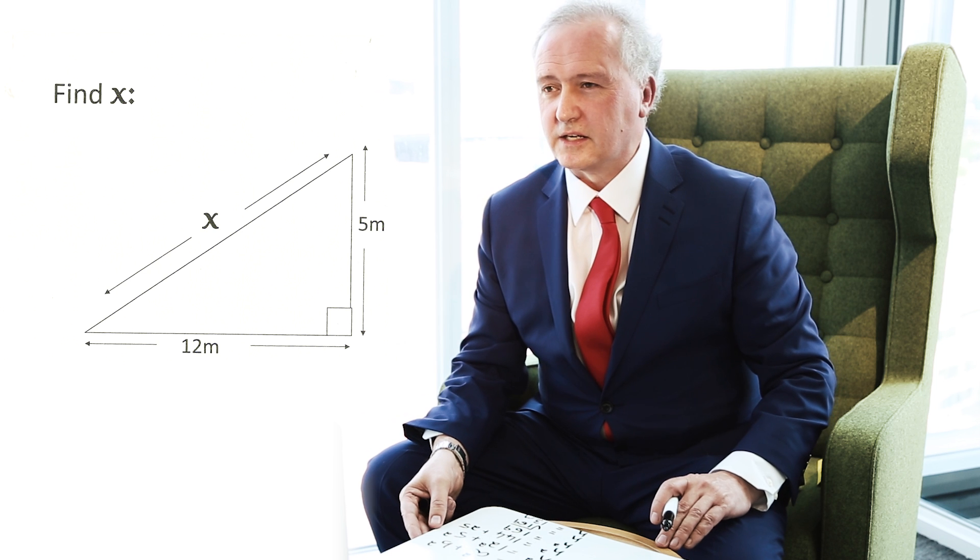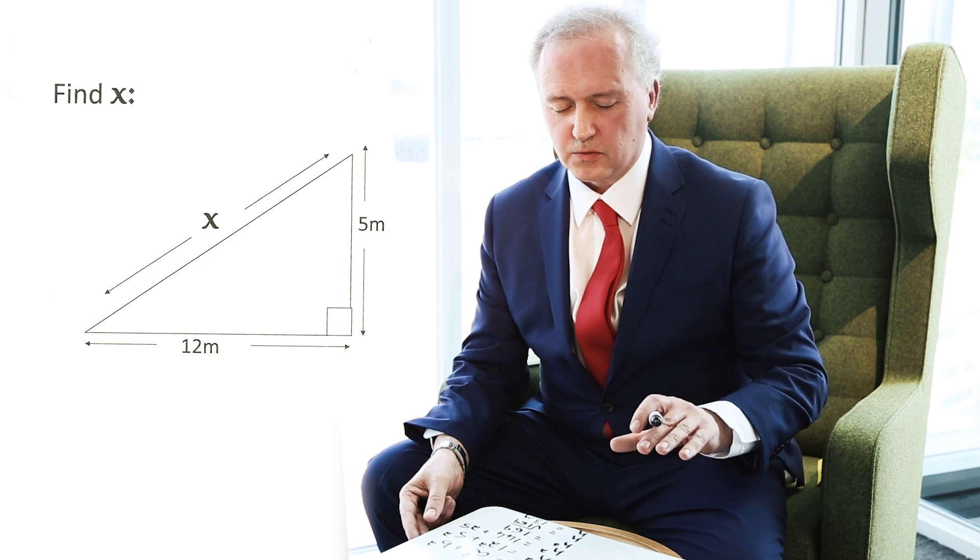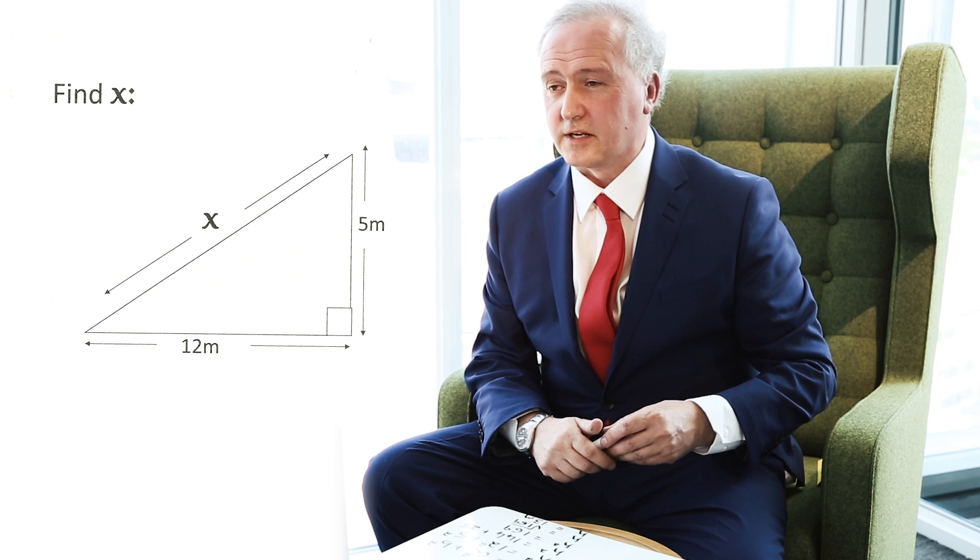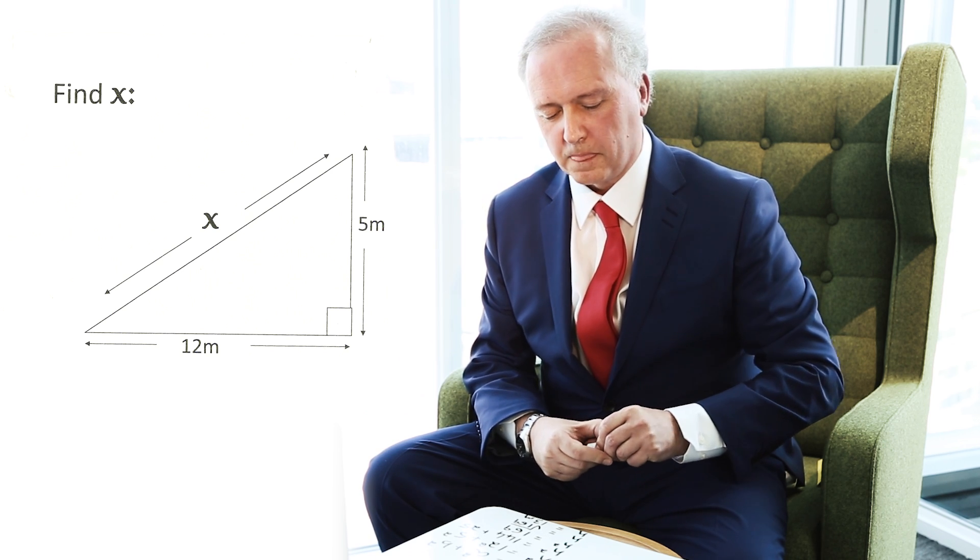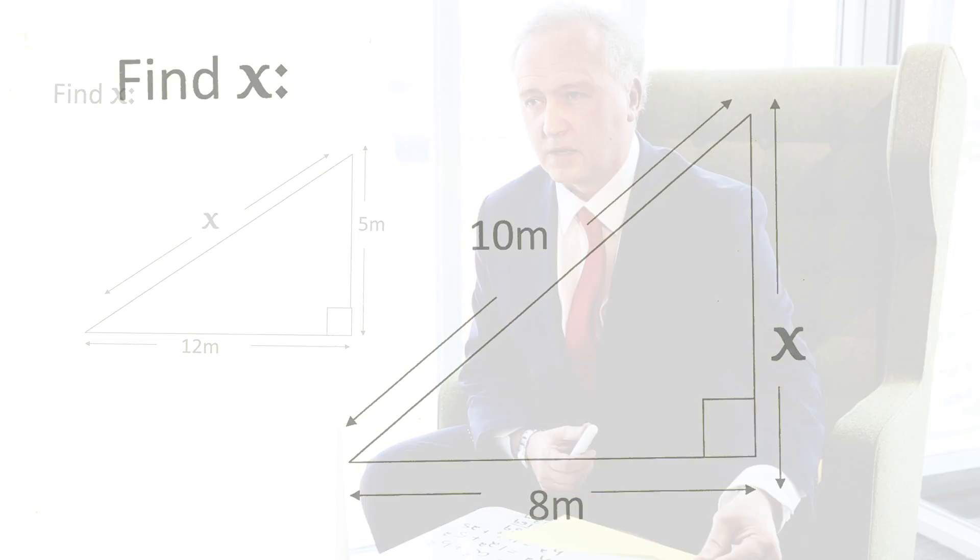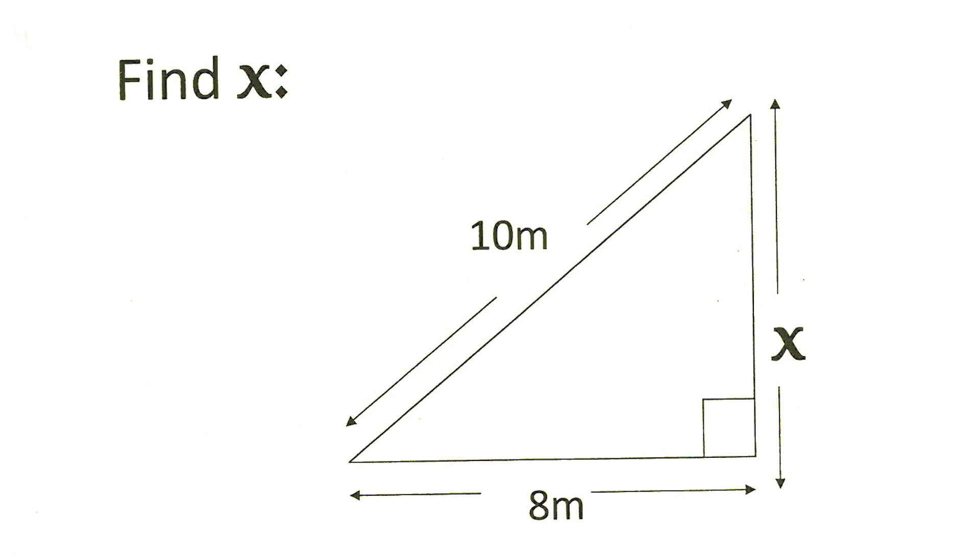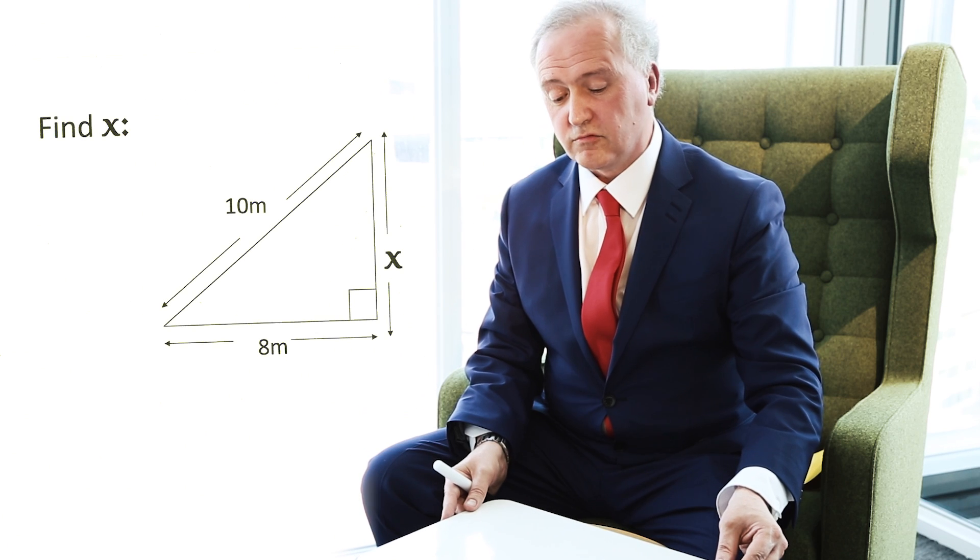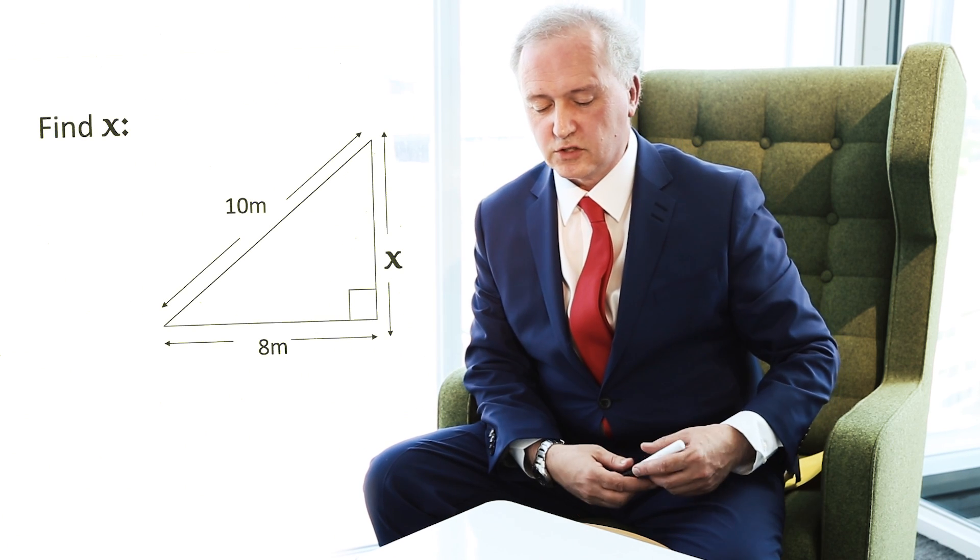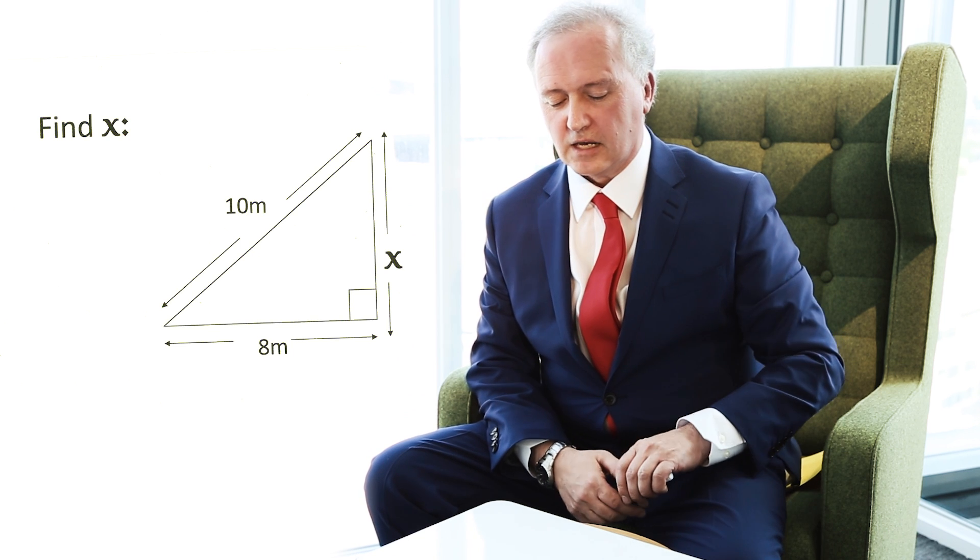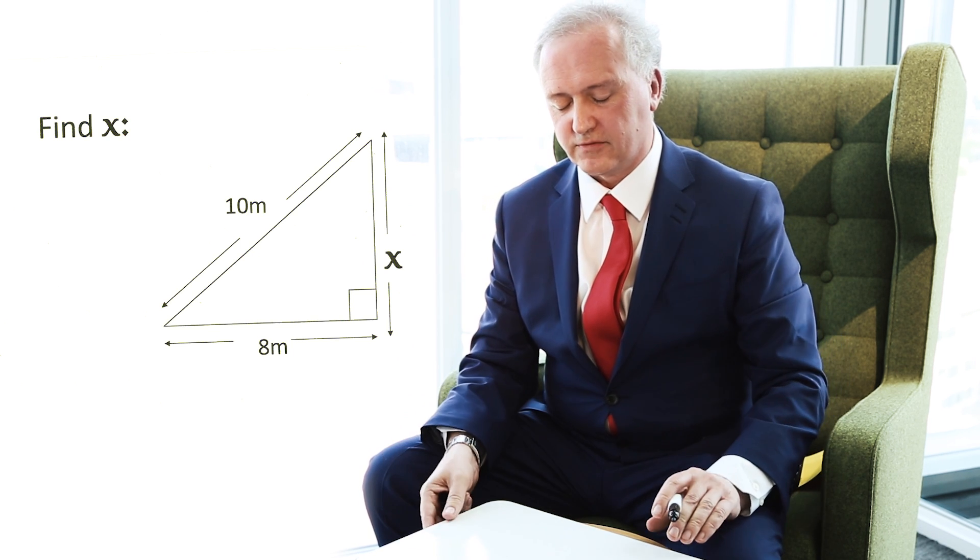Now sometimes in an exam, we're given another situation involving a right-angle triangle, two sides are given. But on this occasion, we may be given the hypotenuse. So in this second example, I have a scenario whereby the longest side is already given to me. So I've got to be really careful in an exam situation to make sure I don't just rush in and pop in our numbers for 8 and 10 metres, respectively.